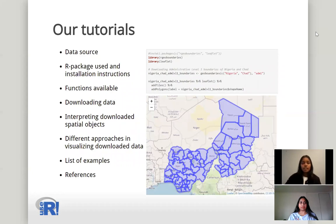Our tutorials. Each tutorial will first talk about the data source we are retrieving data from, to ensure the reliability of the data. We also include information about the R package used to download this data and installation instructions for the R package. Then we briefly talk about the main functions available in the R package and how to download data using these functions. We include a small section on how to understand and interpret downloaded data and spatial objects, followed by our main section on different approaches to visualize the downloaded data, such as using different R packages to create non-interactive and interactive maps. At the end, we include a list of complete examples on how to download and visualize these spatial properties using different approaches, ending with a list of references.